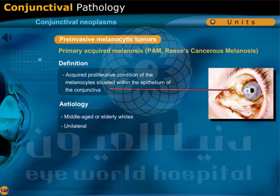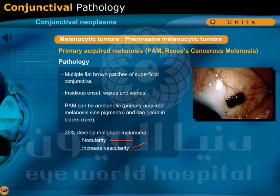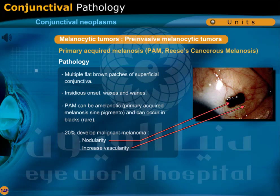Primary acquired melanosis is a precancerous acquired proliferative condition of the melanocytes situated within the epithelium of the conjunctiva. It affects middle-aged or elderly white individuals and is unilateral. Multiple flat brown patches of superficial conjunctiva are present with an insidious onset that waxes and wanes. PAM can be amelanotic and can occur in blacks, though this is rare. 20% of patients develop malignant melanoma, detected by nodularity and increased vascularity.